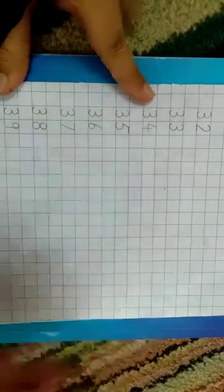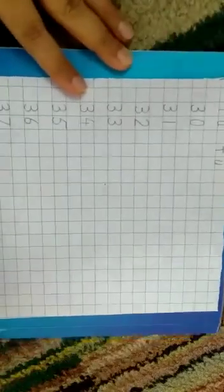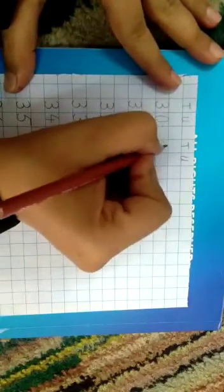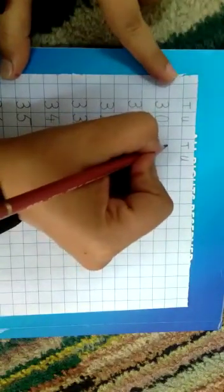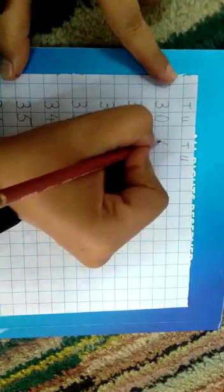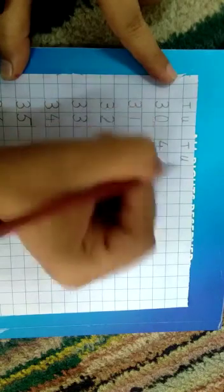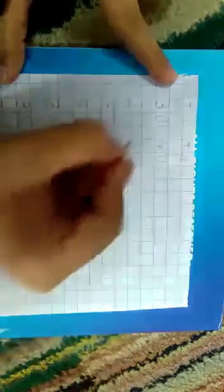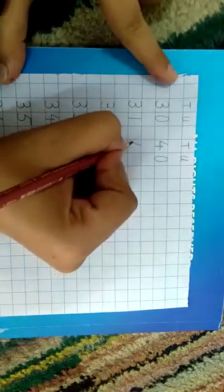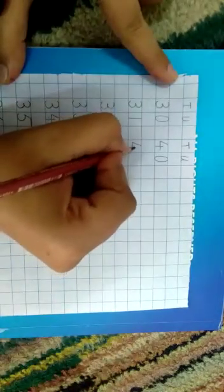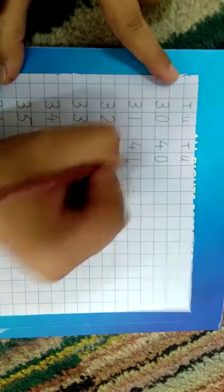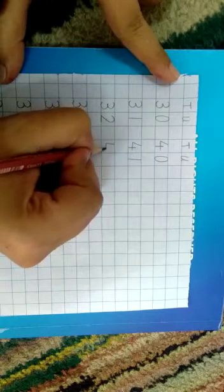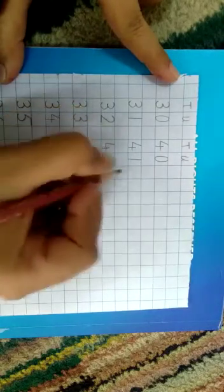Next forty. Come to the next line. Yehaan pe aap ne four. Tens ki ni chae a jae ga. That is zero. Forty. One. Forty. Two.